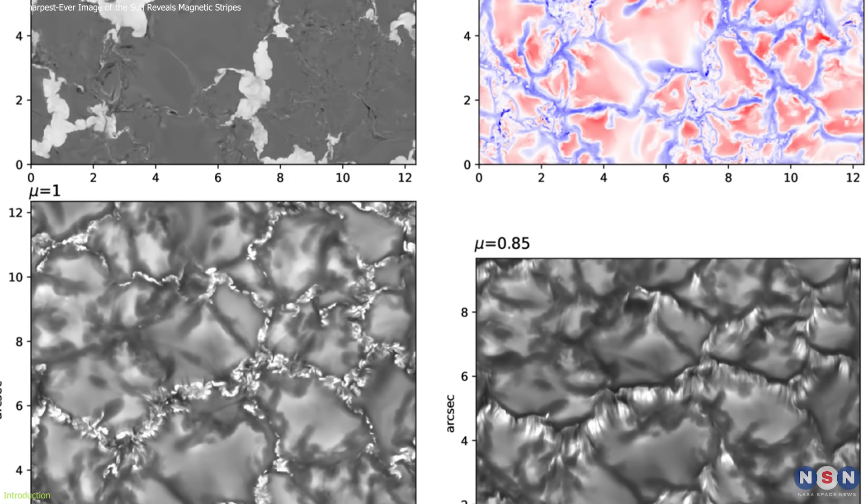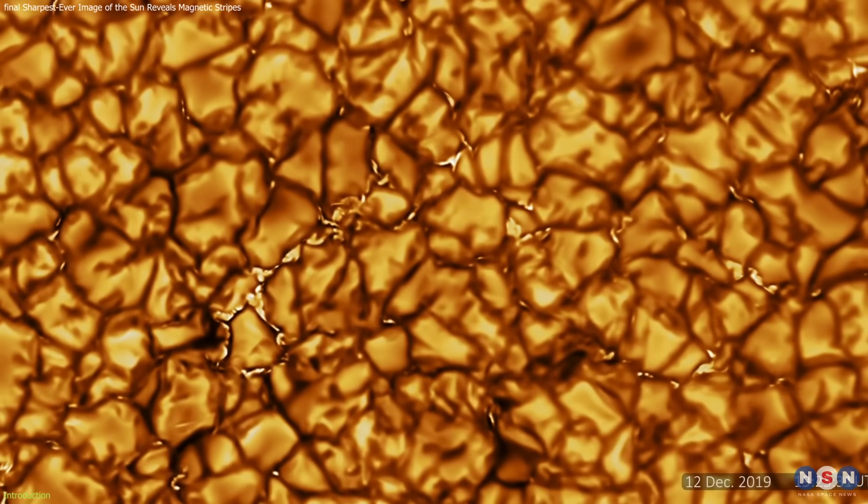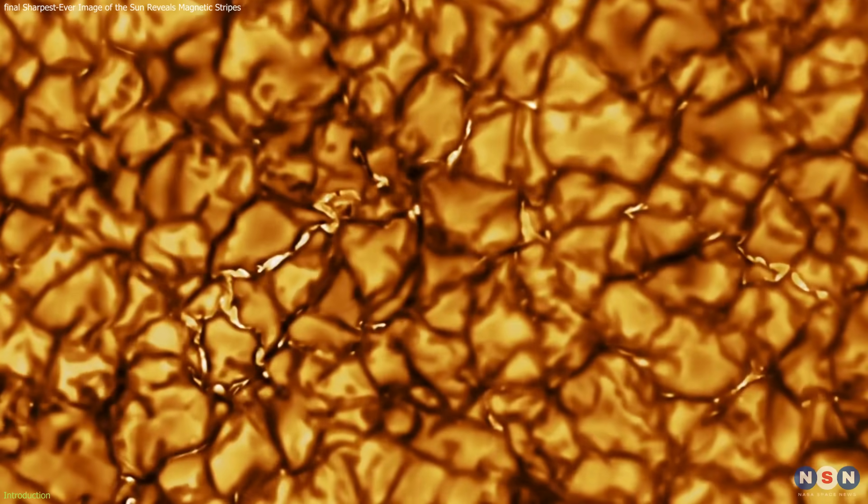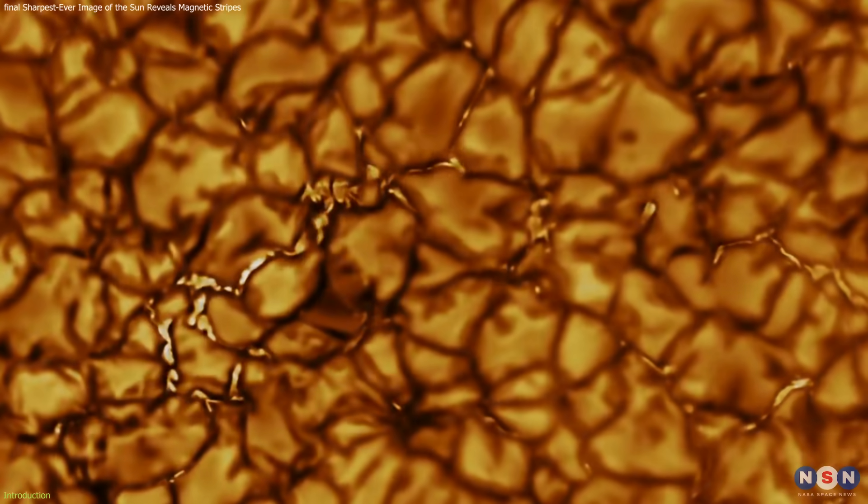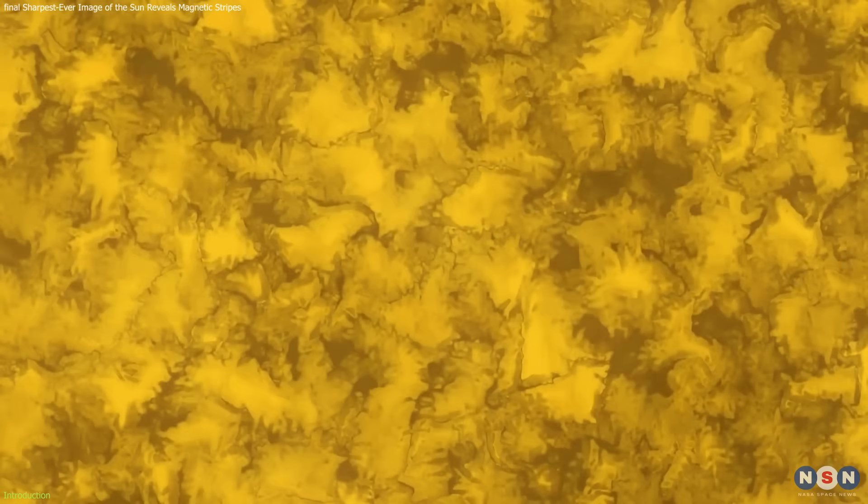These newly observed photospheric striations aren't tied to solar flares, but show a hidden magnetic layer shaping the Sun in subtle ways. This breakthrough marks a new era in solar science, turning once-theoretical structures into a visible reality.